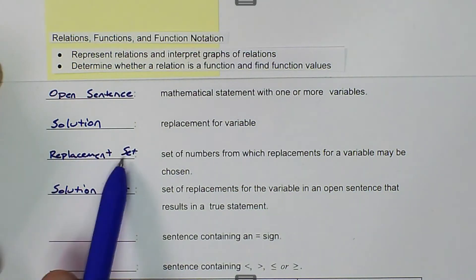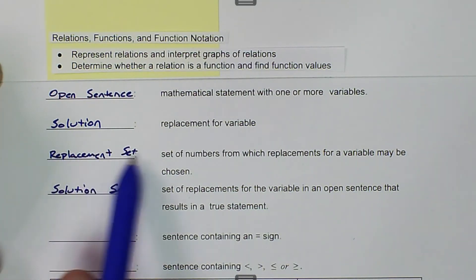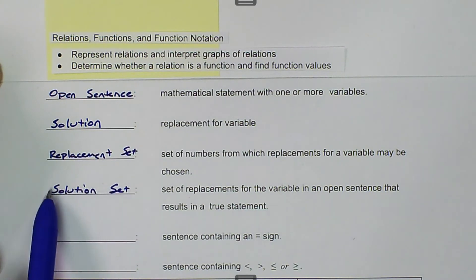So this is a set of numbers you can choose to put in, and this is the set of numbers that makes the statement true.